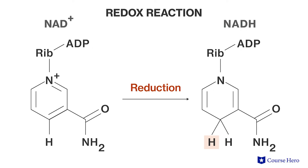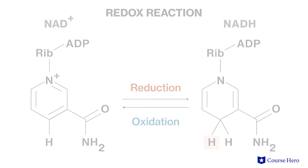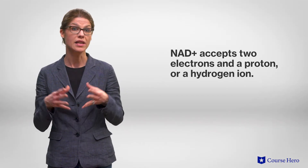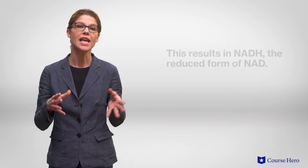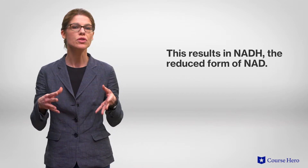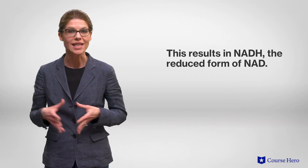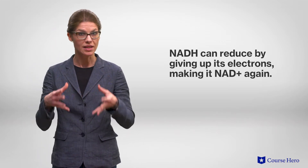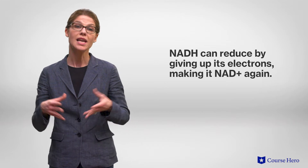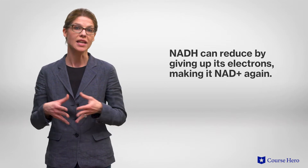NAD+ is an electron acceptor and thus an oxidizing agent. It accepts two electrons as well as a proton, or hydrogen ion, from glucose to result in NADH, the reduced form of NAD. NADH can reduce a metabolite by giving up its electrons, thus becoming NAD+ again. NAD+ can participate in redox reactions over and over again.